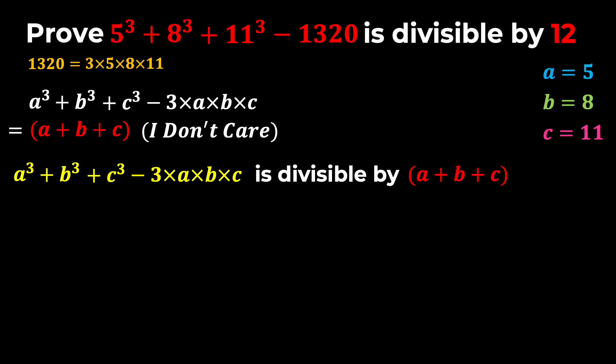Now notice that A is 5, B is 8, and C is 11, so our expression is divisible by 5 plus 8 plus 11, which is 24. So A cubed plus B cubed plus C cubed minus 3ABC is divisible by 24, and we know that 24 is divisible by 12.